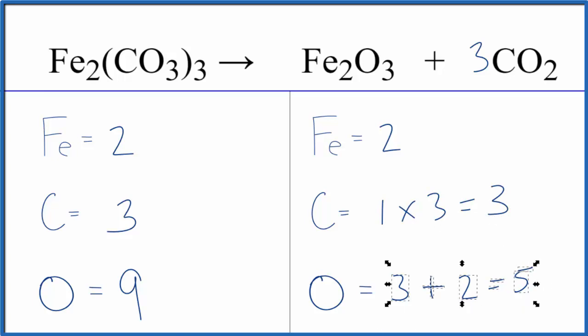Let's update the oxygens here. We have the three oxygens here, plus two times three, that's six, which is great because that gives us nine, and we're done. This equation is balanced.